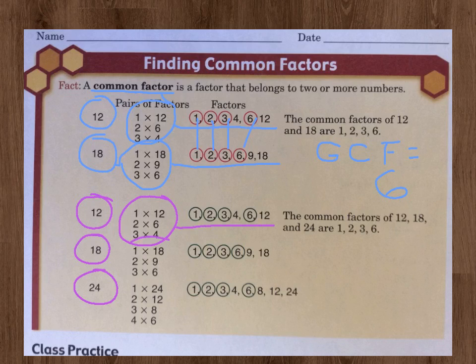Then with 18, they did their pairs of factors: 1 times 18, 2 times 9, 3 times 6, and they wrote those out as well: 1, 2, 3, 6, 9, and 18. And then 24. This time they've used 3 numbers. 24, they've got 1 times 24, 2 times 12, 3 times 8, and 4 times 16. And they wrote all those out right here.